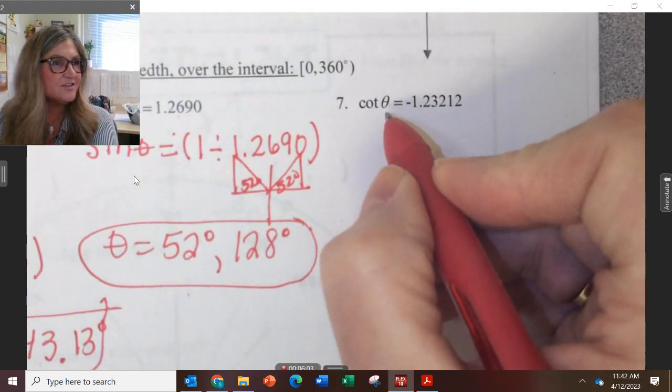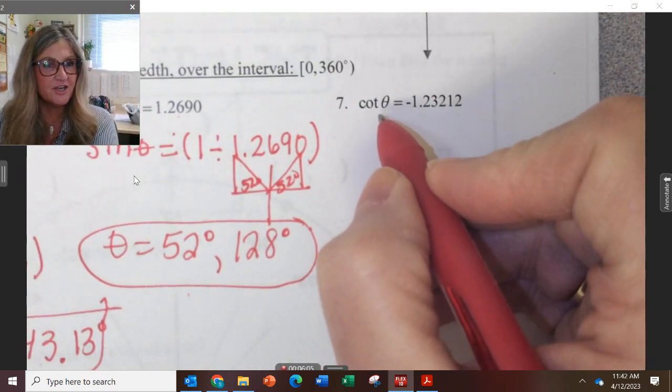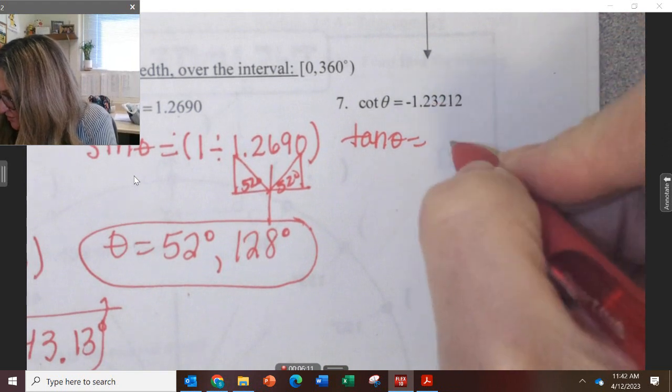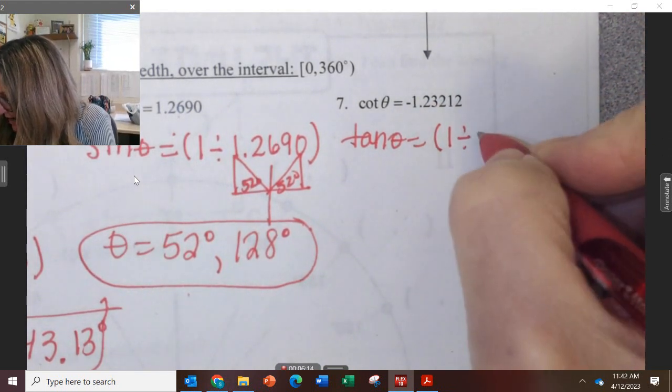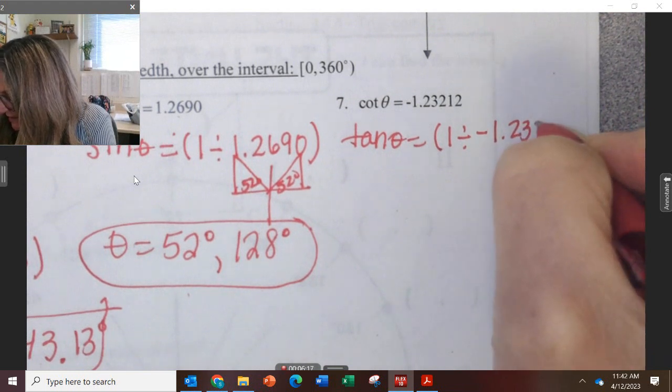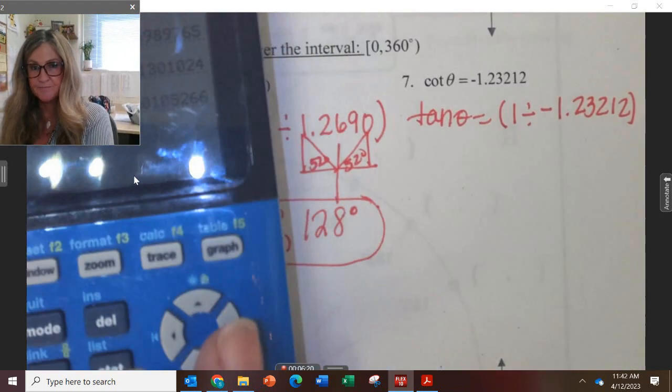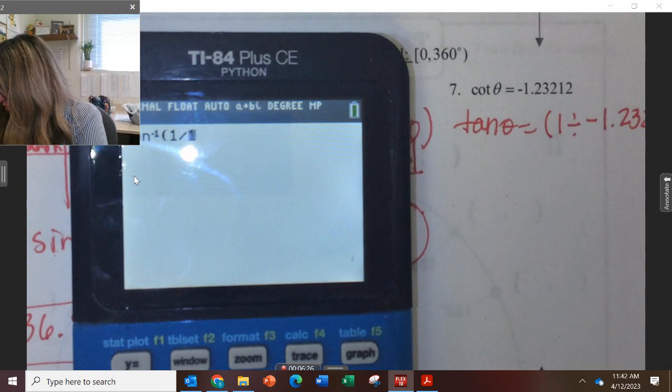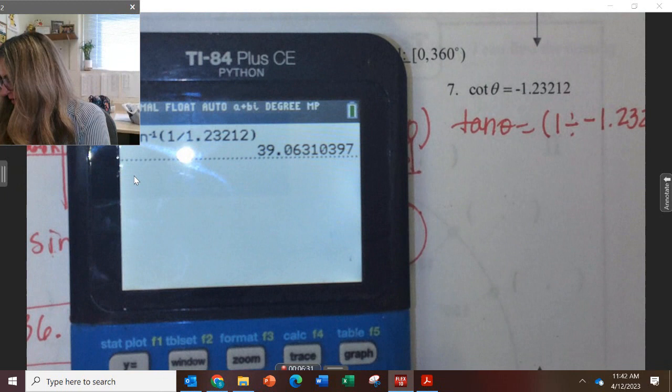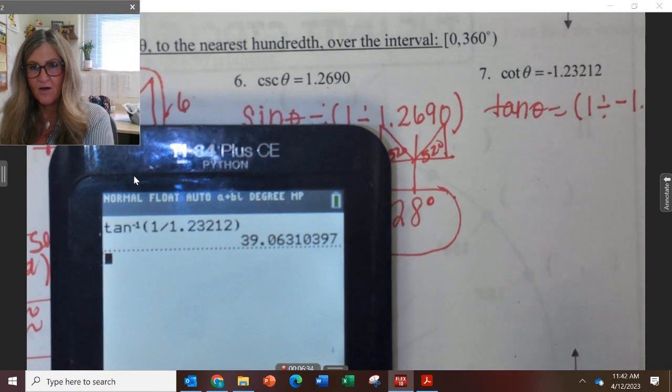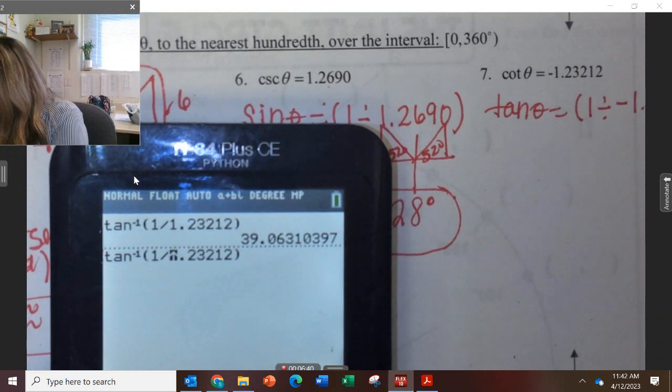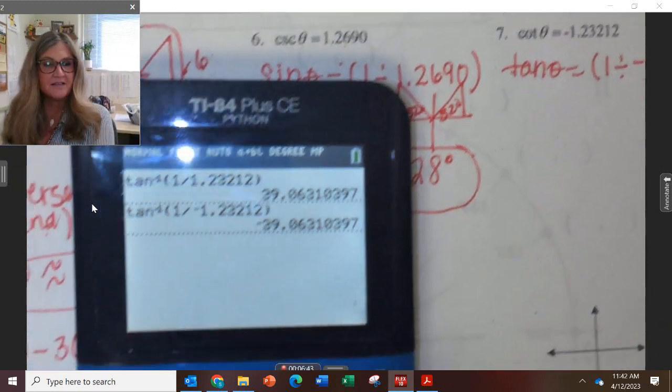All right, it's cotangent. What do I have to change cotangent to? So I have to do tangent theta, and I have to do the reciprocal, so 1 divided by negative 1.23212. So we do second tan 1 divided by 1.23212, and we get this answer. Oh, I forgot the negative. Hold on. I just went back and inserted it.